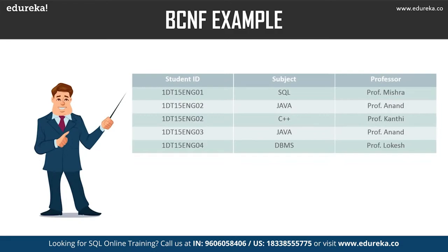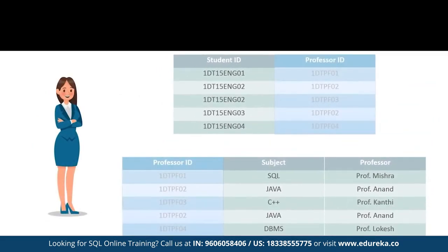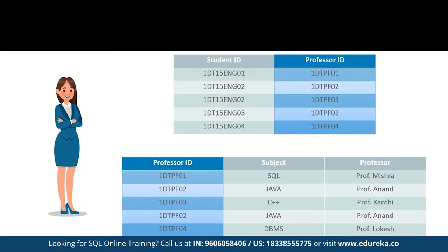In our example table, one student can enroll for multiple subjects, multiple professors can teach one subject, and for each subject a professor is assigned to the student. All other normal forms are satisfied, but Boyce-Codd is not because student ID and subject form the primary key, making subject a prime attribute — yet professor depends on subject, meaning a non-prime attribute functionally determines a prime attribute. To fix this, we split into two tables: the first holds student ID and a new professor ID column; the second holds professor ID, professor, and subject. Now professor ID is the super key of the second table, satisfying Boyce-Codd normal form.